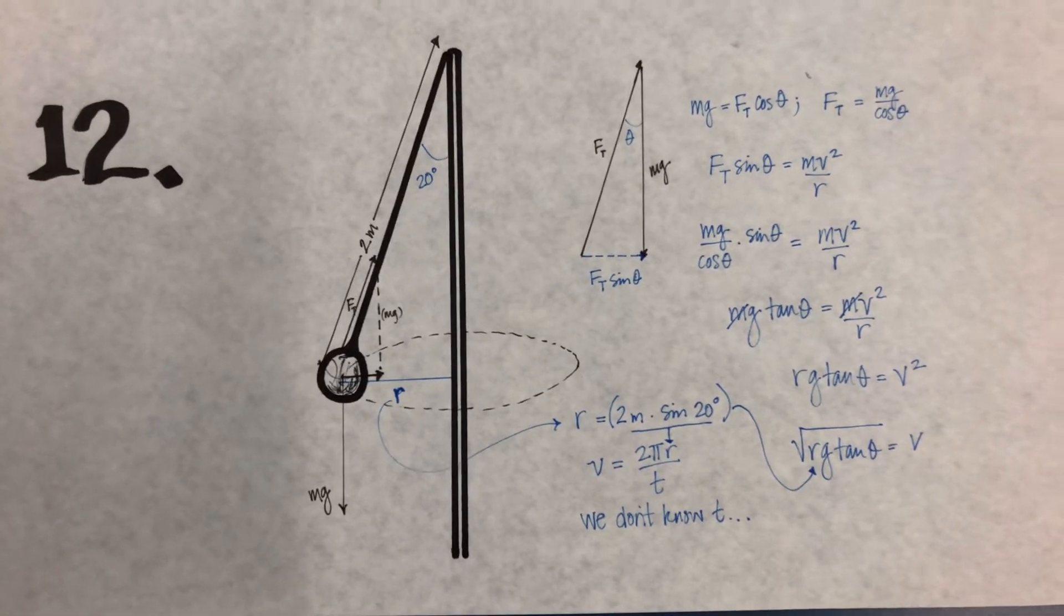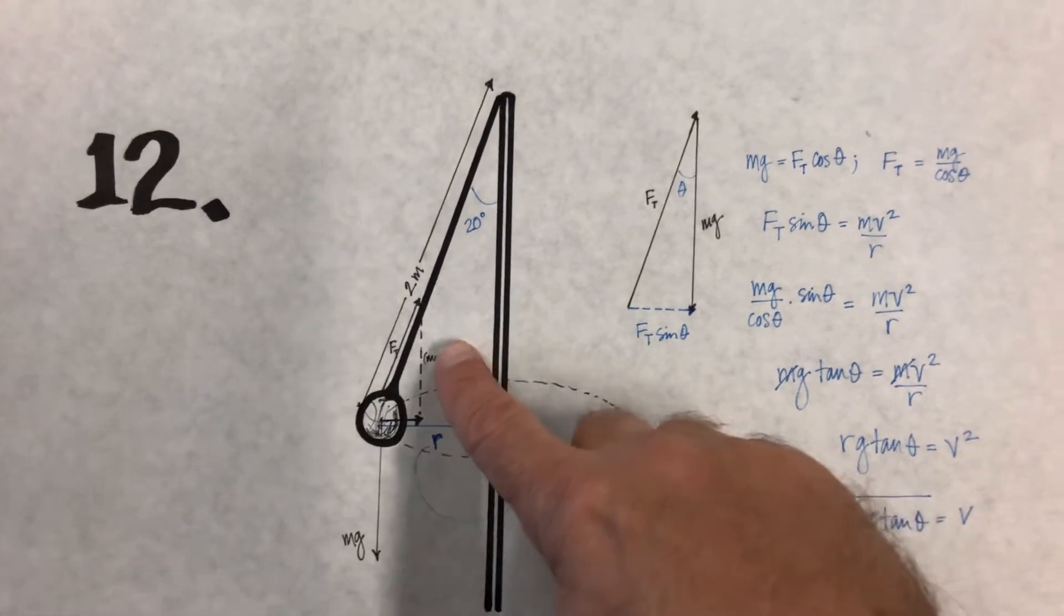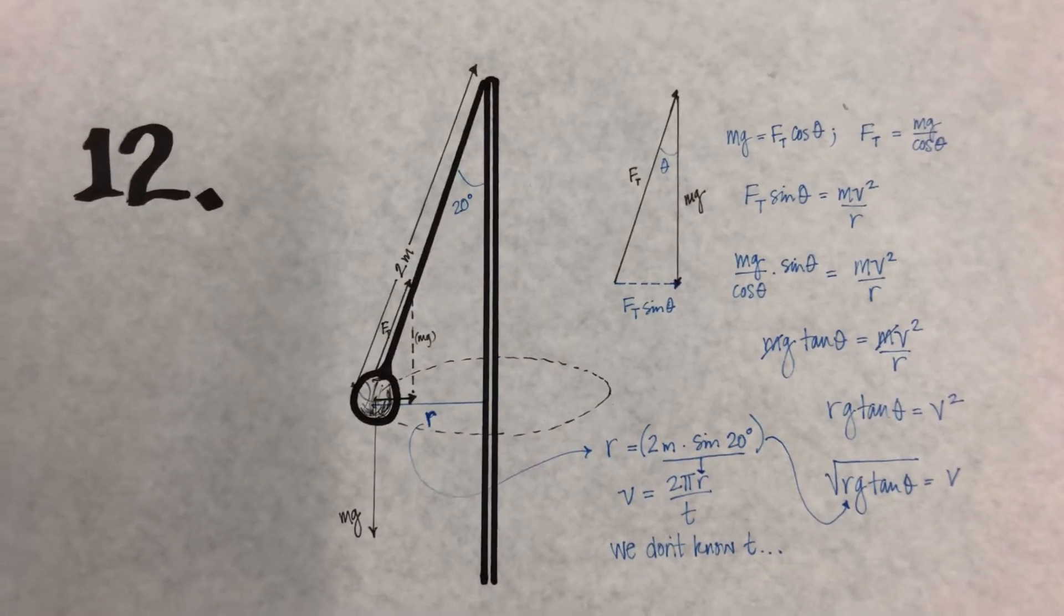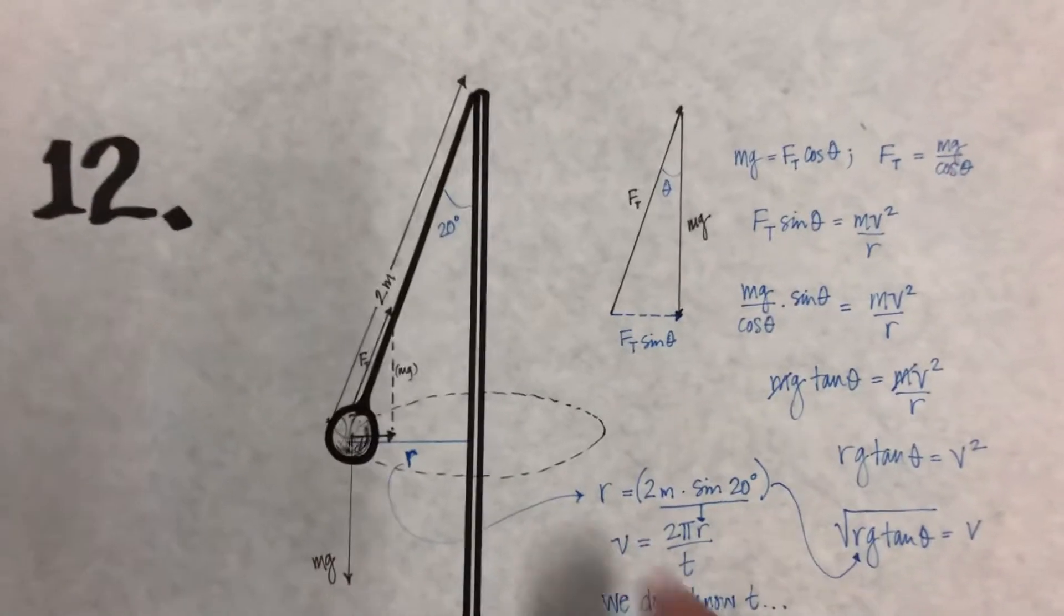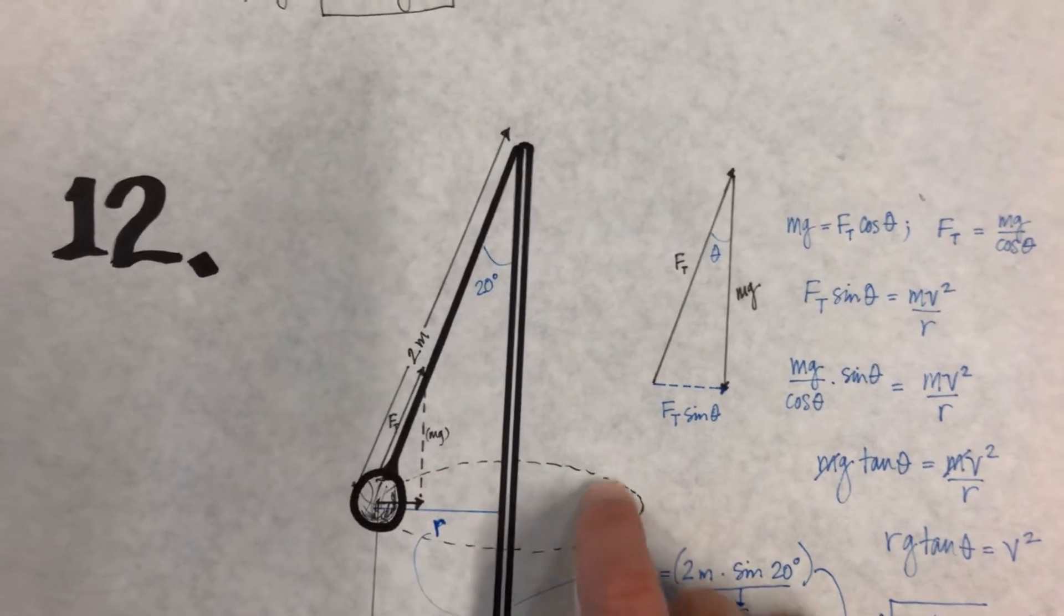Napoleon Dynamite is playing tetherball. He hits the ball so that an angle of 20 degrees is formed between the 2-meter rope and the pole. What will the linear speed of the ball be in its circular path around the pole? So the linear speed, meters per second, as it rotates around.